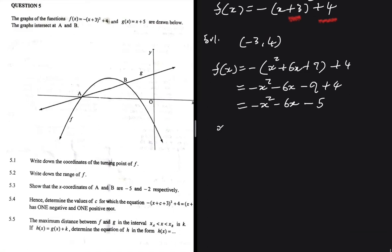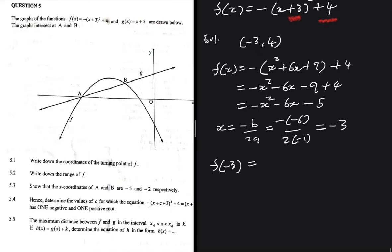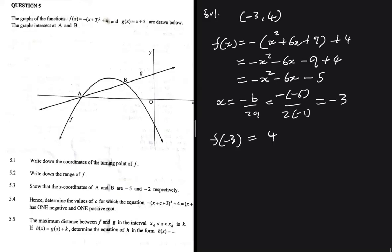If you say x = -b/2a, you're going to get -(-6) divided by 2(-1), which equals -3. And then if you substitute -3 into f(x), you're going to get 4. So the coordinates of our turning point are (-3, 4).